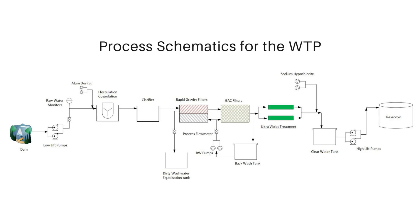Before the water enters the flocculation tanks we dose aluminium sulfate, which is a coagulant. The water then flows from the flocculation tanks to the clarifier, then it goes to the rapid gravity filters. These filters use sand as a filtration medium — we have a choice to use sand only or a dual media filter with sand and anthracite, which we will determine later during design. From the rapid gravity filters, the water is collected and goes into the GAC filters.